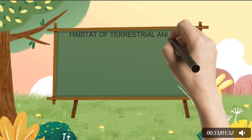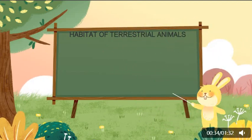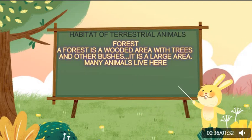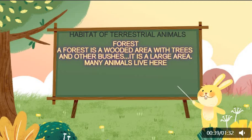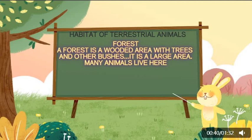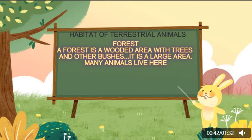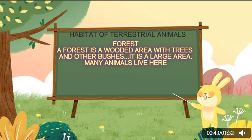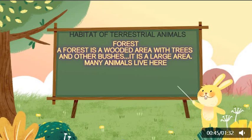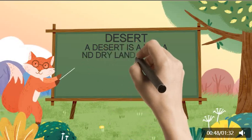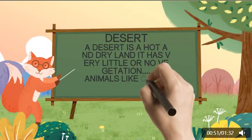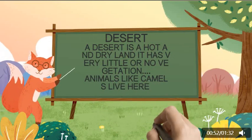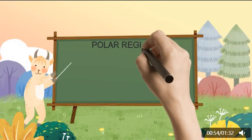Habitat of Terrestrial Animals. Forest is a wooded area with trees and other bushes. It is a large area and many animals live here. Desert is a hot and dry land. It has very little or no vegetation.